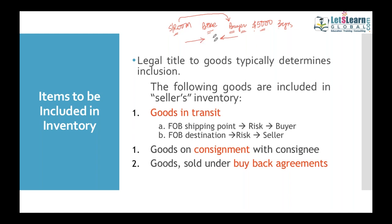Under the buyback agreement, an agreed amount of $1,500 will be adjusted against a new product after three years. The bike's maintenance, insurance, etc. are paid by the showroom. The buyer paid $5,000 but gets $1,500 back after three years, so effectively he is paying $3,500 for the usage of the vehicle for three years. Under this method, ownership is still with the dealer.